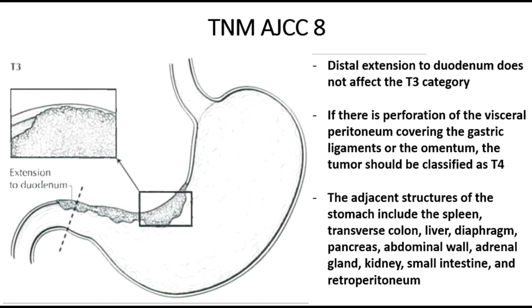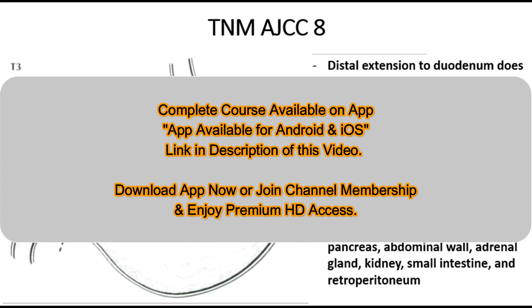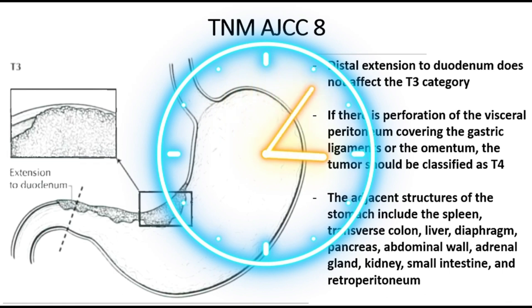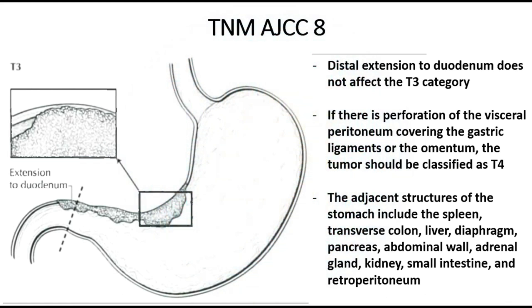The adjacent structures of the stomach include the spleen, transverse colon, liver, diaphragm, pancreas, abdominal wall, adrenal glands, kidney, small intestine, and retroperitoneum. Involvement of these structures does not make the tumor metastatic but classifies it as T4B.